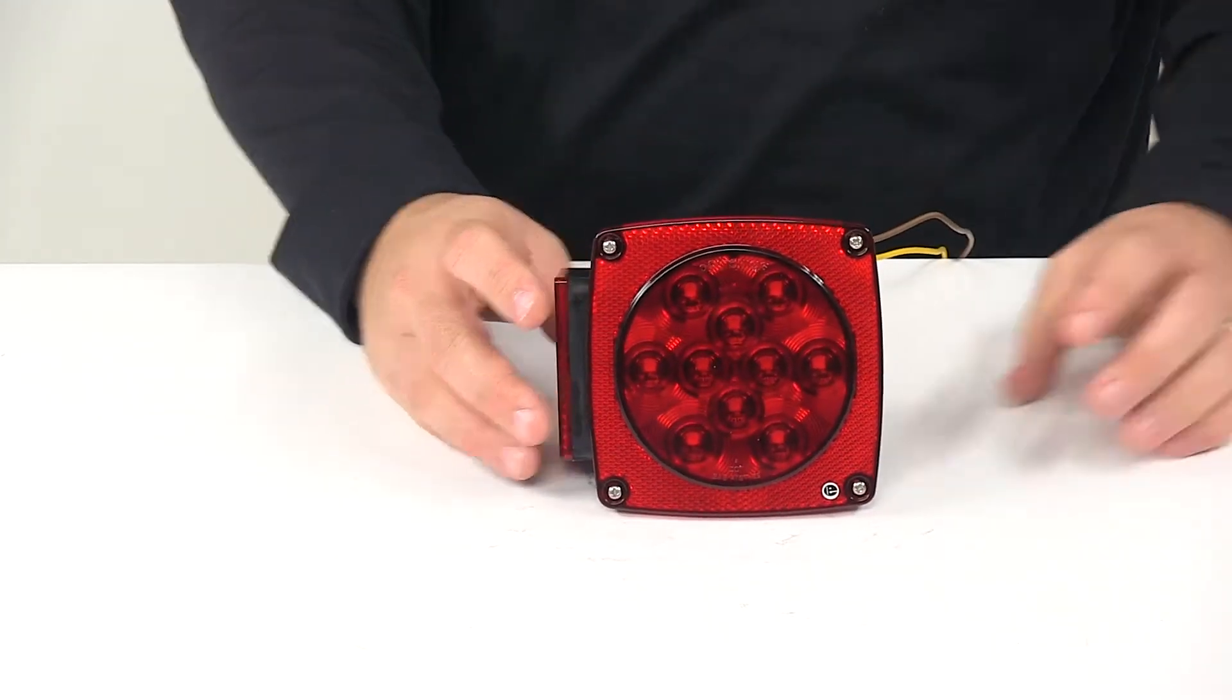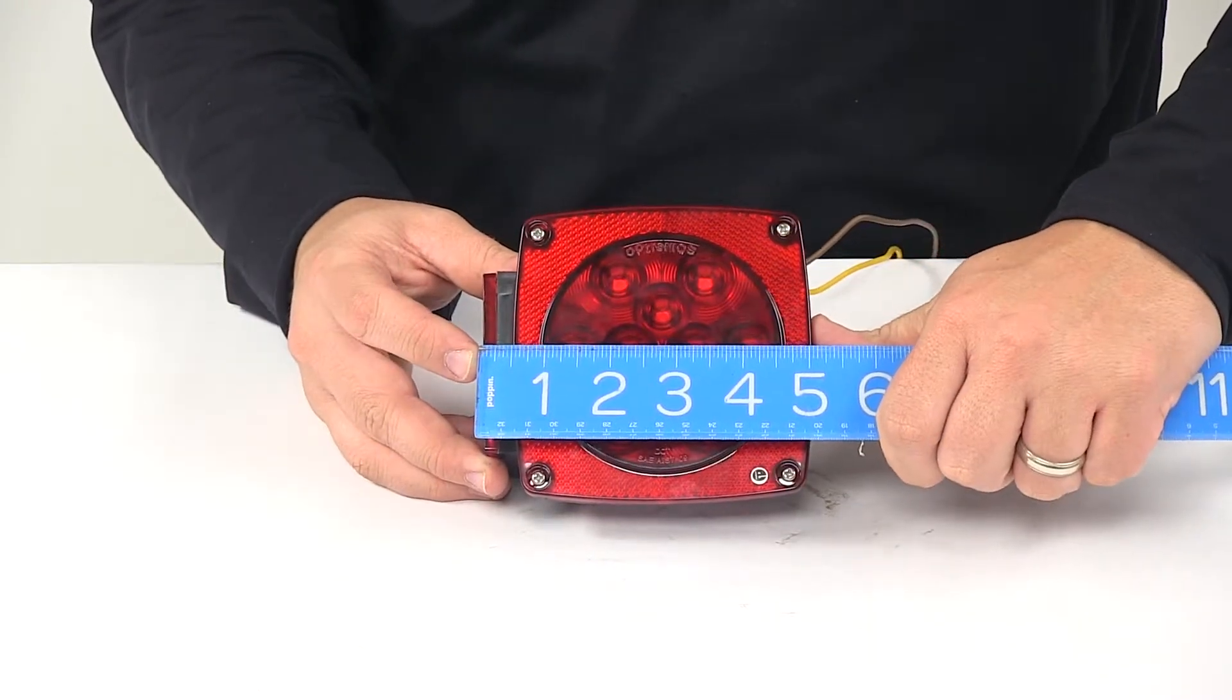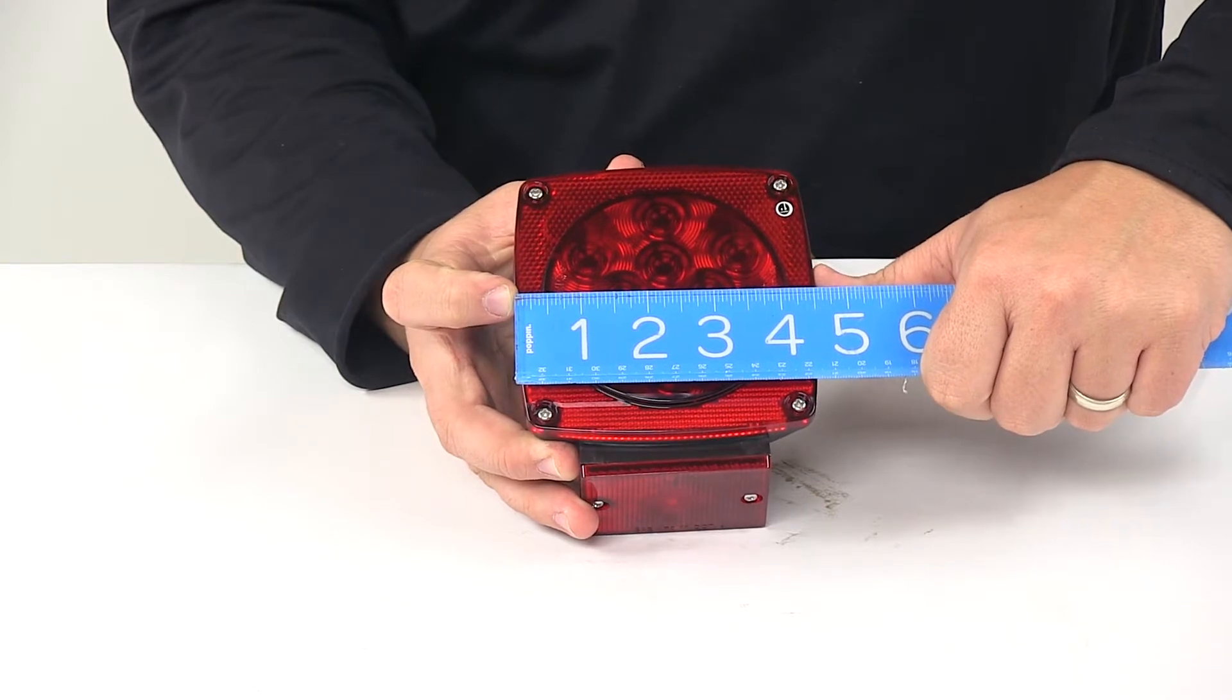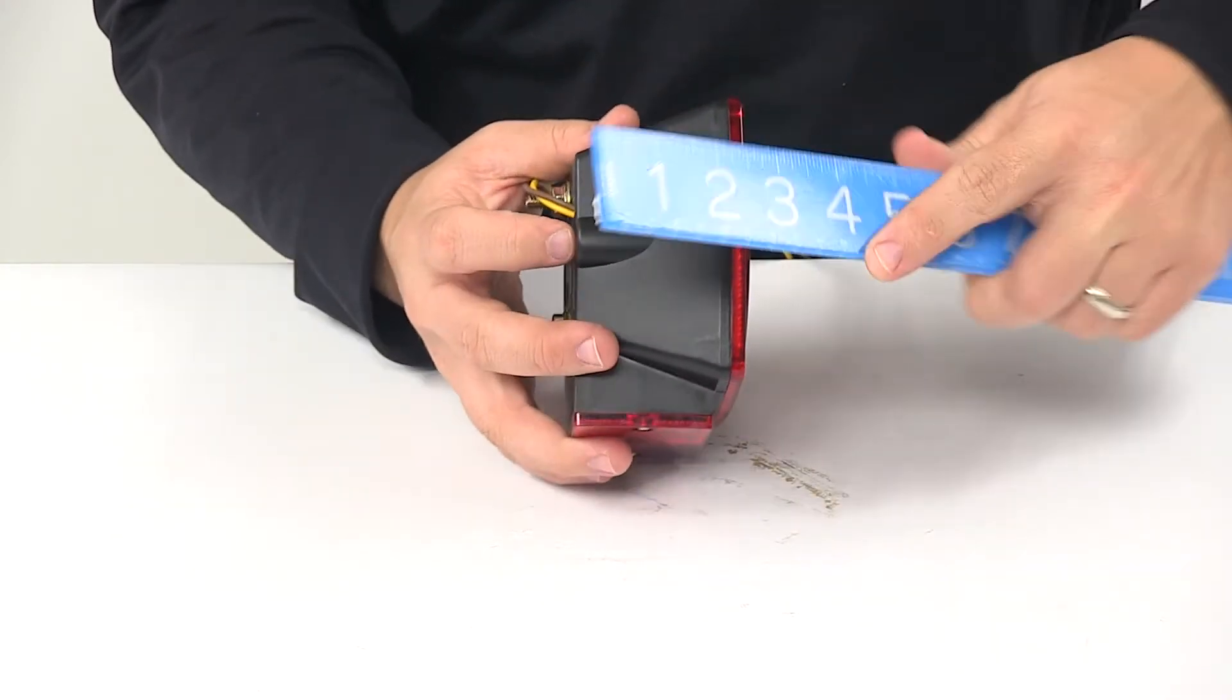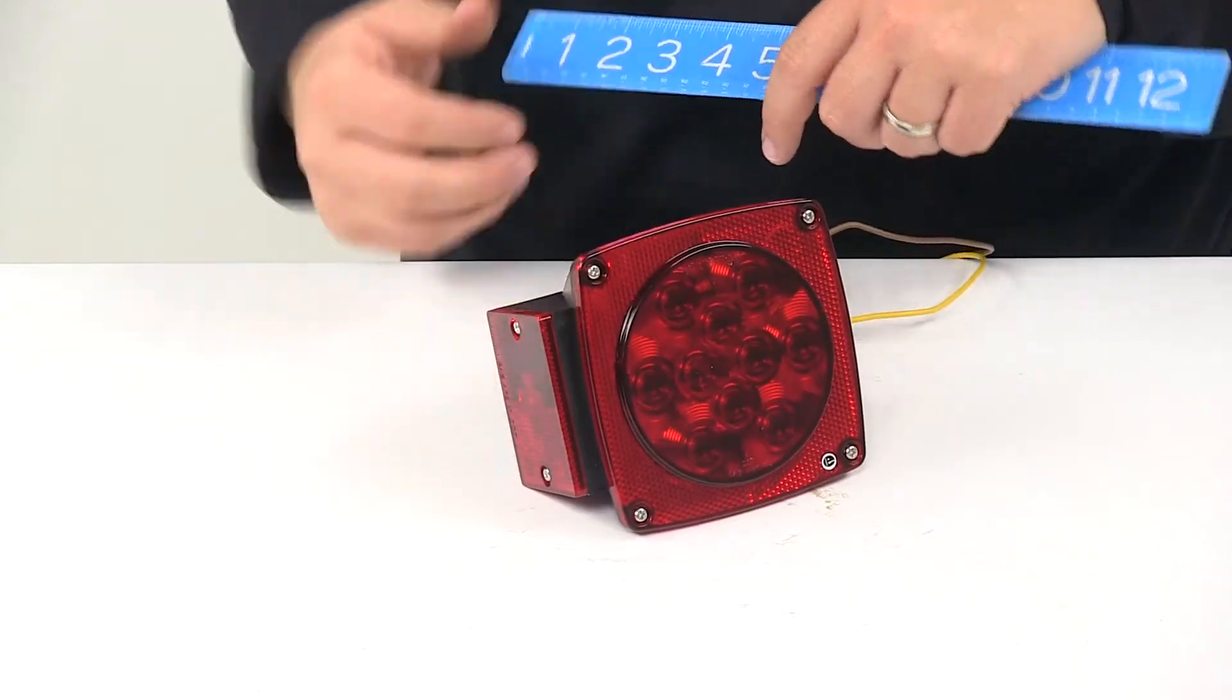When it comes to the dimensions of the unit, going edge to edge, this gives us a measurement of around five inches wide by about four and a half inches tall. From the back of the housing to the front of the lens is about two and eleven sixteenths of an inch deep.